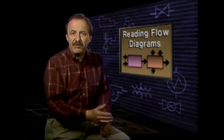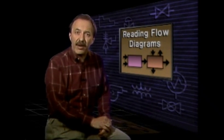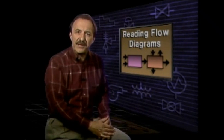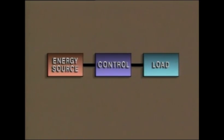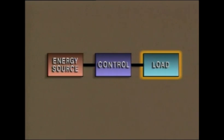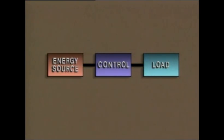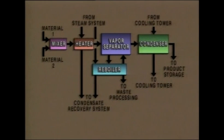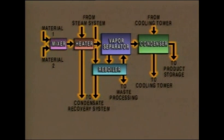Systems and processes can be described by several types of diagrams. A block diagram uses blocks to represent system components or process steps. An energy source provides the energy necessary to do the work required of the system. The control is made up of instruments that monitor, indicate, and adjust the system's operation. The load represents devices that carry out the specific task of the system. The transmission path connects the parts of the system together.